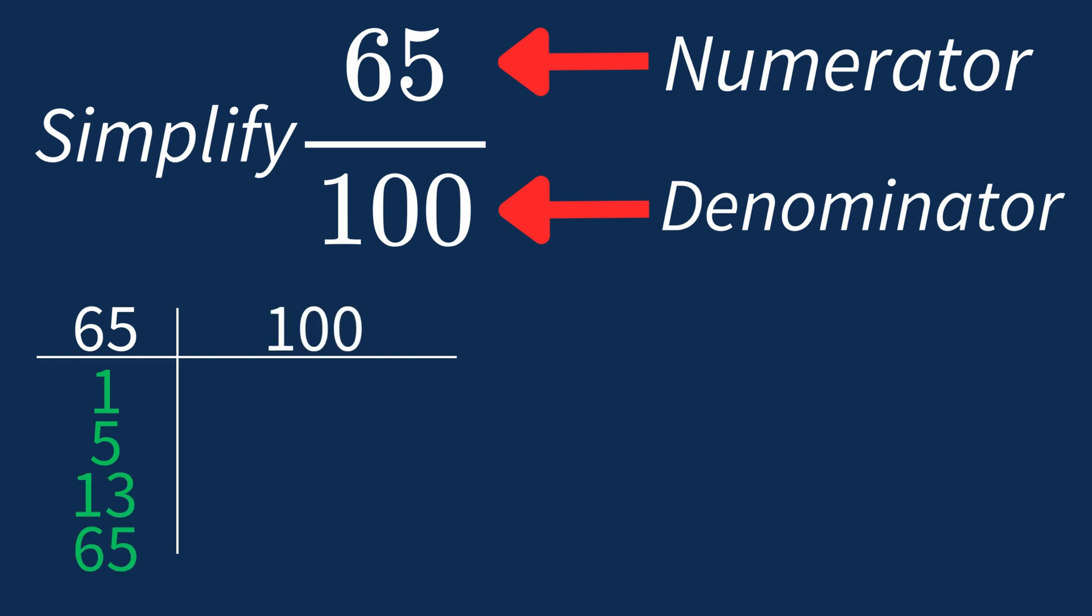For 100, the factors are 1, 2, 4, 5, 10, 20, 25, 50, and 100.